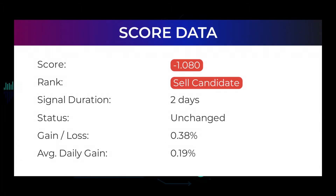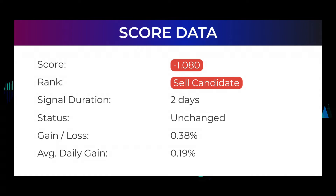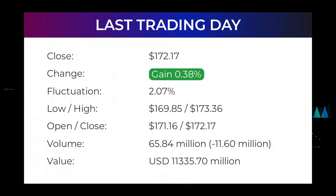In this section you will get some information about the current Apple performance to better understand where the stock is right now. In our systems, the Apple stock currently holds a minus 1.080 score and our system has ranked Apple a sell candidate since April 6, 2022. In this period the stock has so far done better than what our systems expected and had a gain of 0.38%, an average return of 0.19% per day since first recommended. Our last headline reads: Apple stock price ended on $172.17 on Thursday after gaining 0.38%.